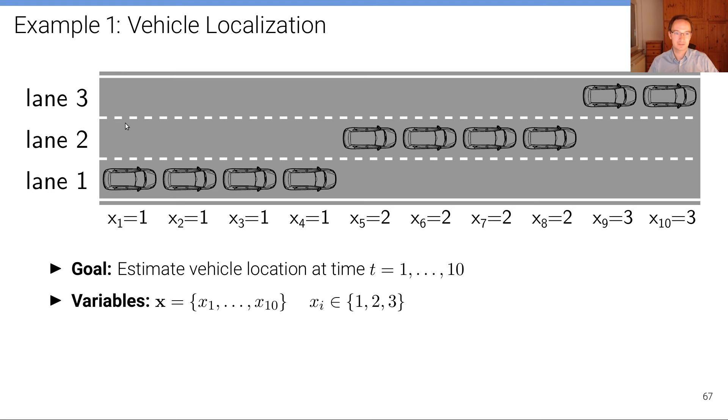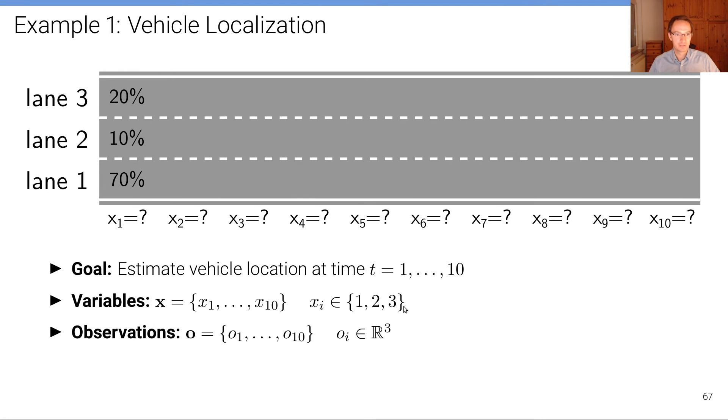For this particular situation that we see here we have this particular configuration of random variables at the bottom. So we have 10 random variables here where each of them can take state 1, 2, or 3. Now in addition to this we have observations.